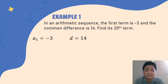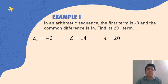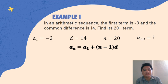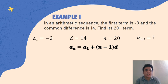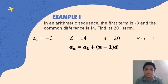The 20th term — pang ilan yung term — that is the value of n, which is 20. So what we are looking for is A sub 20. Since we are finding A sub n, we will use the first formula: A sub n equals A sub 1 plus (n minus 1) multiplied by d. After knowing the formula, the next step is to substitute all the given. So we have: A sub 20 equals negative 3 plus (20 minus 1) multiplied by 14.